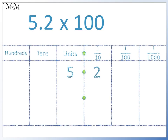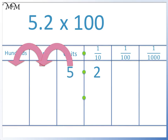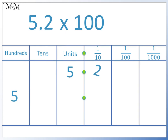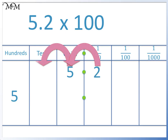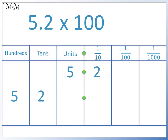Here is another example: 5.2 times 100. We move each digit two places to the left. We will start with the 5 — we move the 5 to the hundreds column. Next we move the 2 to the tens column. There is a space in the units column, so we write in a zero. 5.2 times 100 equals 520.